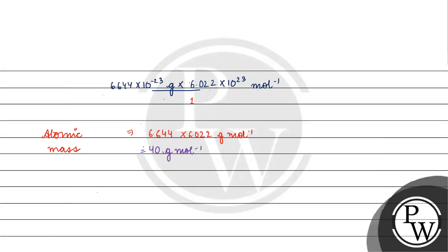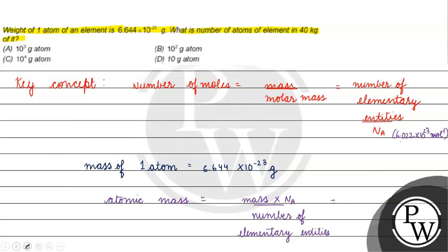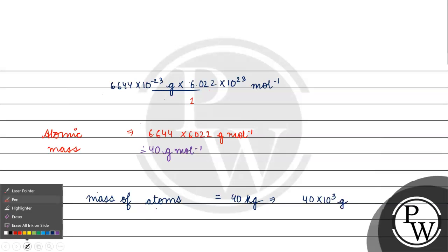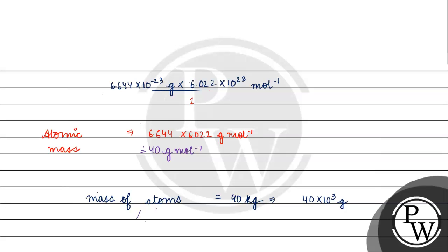Now, mass of the sample that has been given is 40 kg, which we convert to 40 into 10 raised to the power 3 grams. The atomic mass is 40 gram per mole.